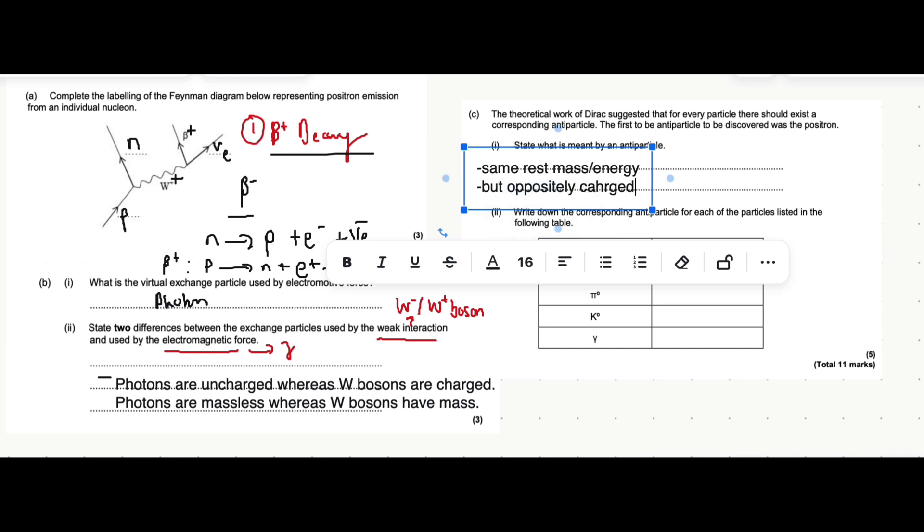To give you an example, a proton and an antiproton, they have the same rest mass, same rest energy, but a proton is positively charged whereas an antiproton would be negatively charged.